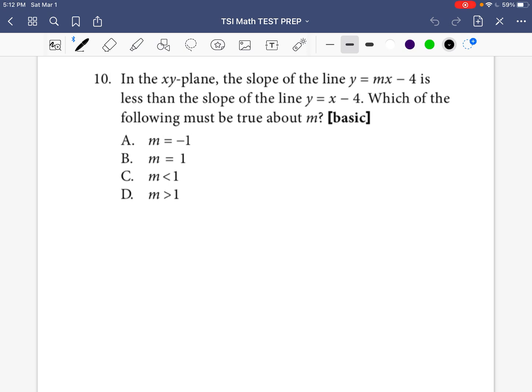So question number 10 says, in the XY plane, the slope of the line Y equals MX minus 4 is less than the slope of the line Y is equal to X minus 4. Which of the following must be true about M? So it's really simple. All you have to do is write this first equation. Y is equal to MX minus 4. Then write the words less than.